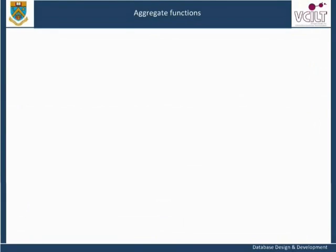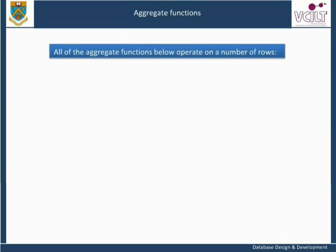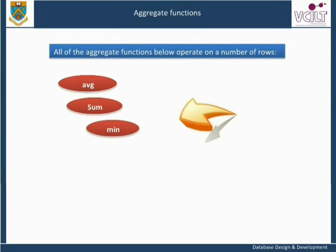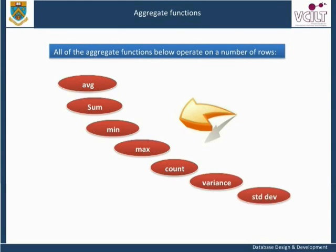Aggregate functions. All of the aggregate functions below operate on a number of rows: AVG, SUM, MIN, MAX, COUNT, VARIANCE, and STDDEV.